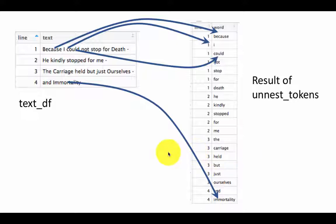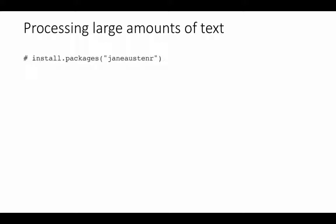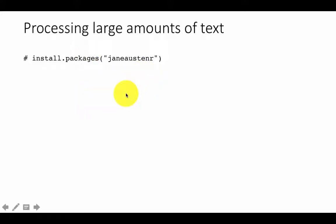With those basics out of the way, let's take a look at some large-scale text processing. We're going to use a package called janeaustenr, which provides access to the complete text of all the books written by Jane Austen. Any large body of text gives us raw material to practice our text mining skills. Of course, the methods we're learning here can be applied to any large amounts of text — a whole archive of emails, blog posts on a particular topic, or news articles from the New York Times, Wall Street Journal, or The Economist.